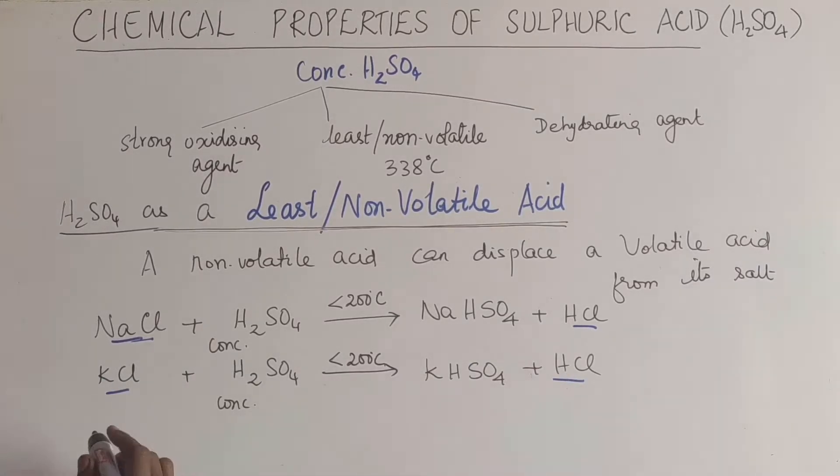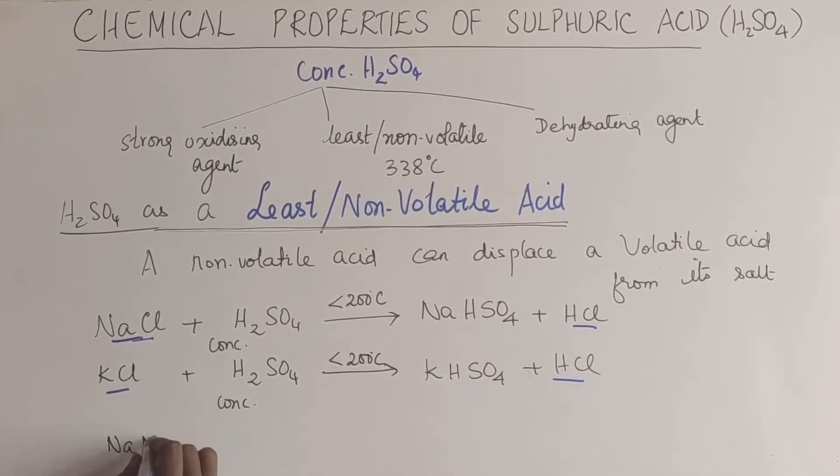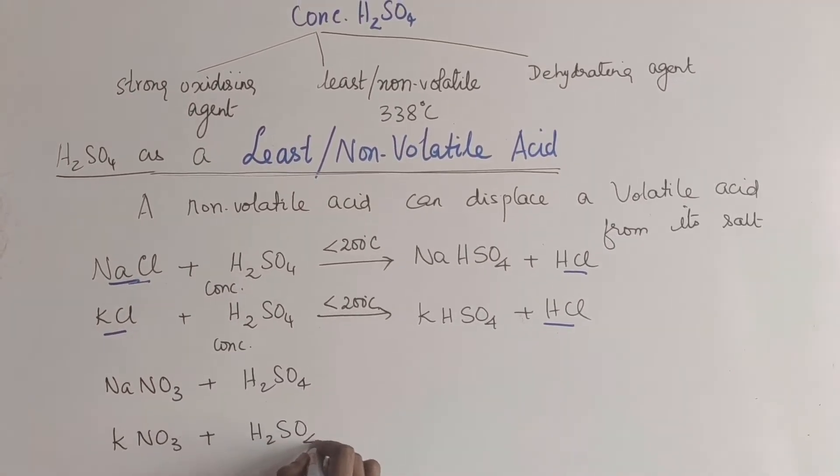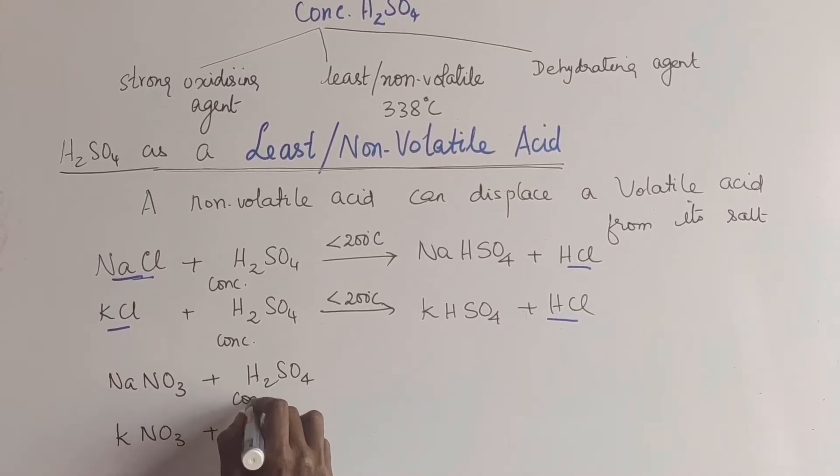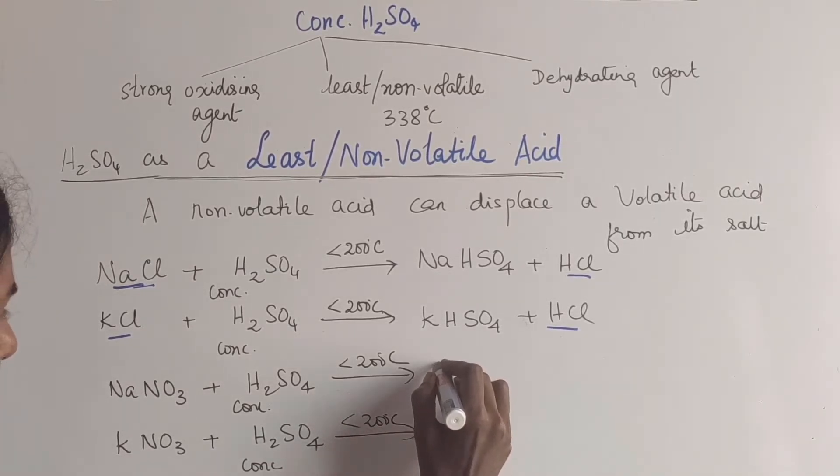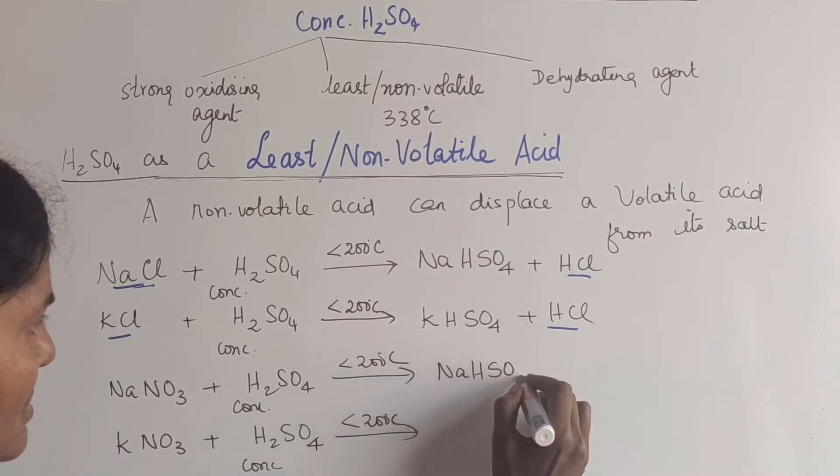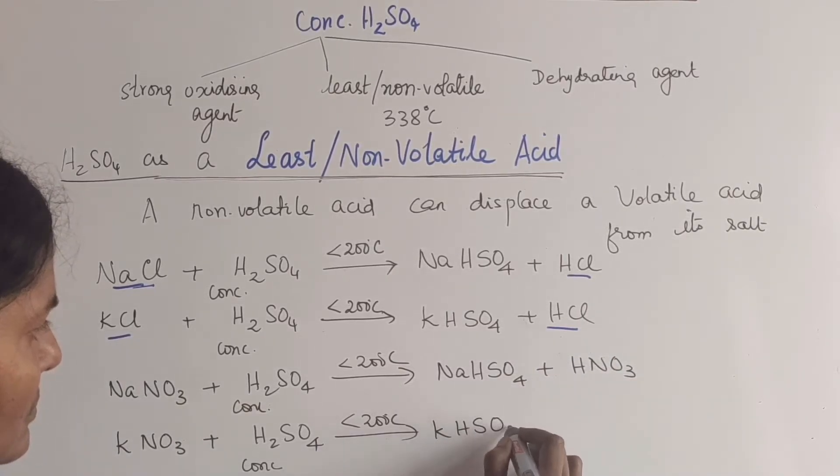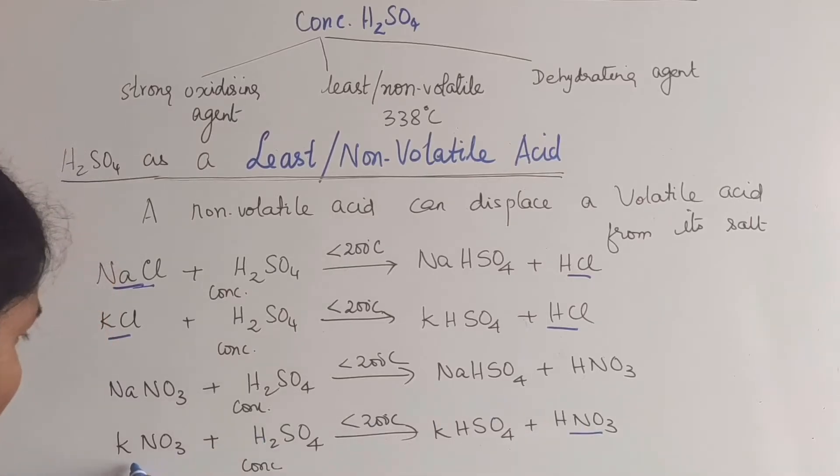This happens for hydrogen chloride and it happens for nitric acid also using either sodium nitrate or potassium nitrate and the same concentrated sulfuric acid can displace them less than 200 to give sodium bisulfate. Same product. Only the acid formed is different. Again, this has been displaced from its salt. Nitric acid displaced from sodium nitrate. These are the properties of nonvolatile acid.